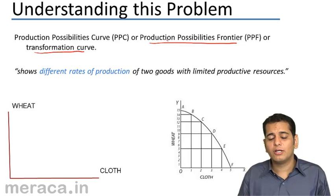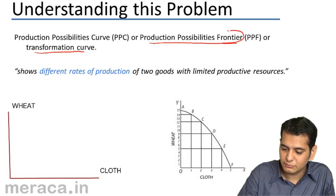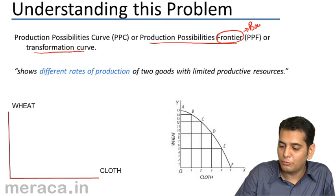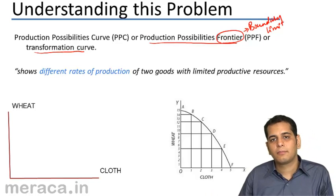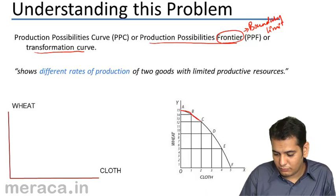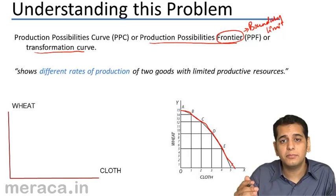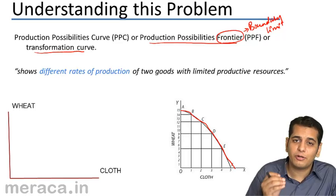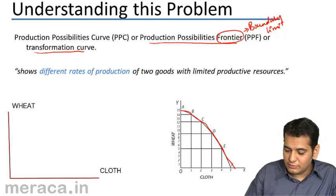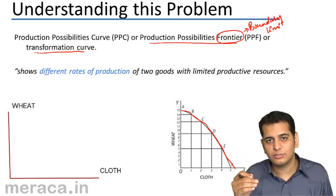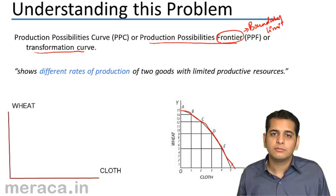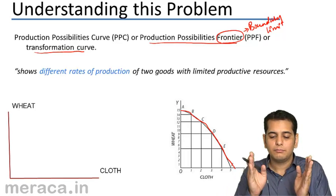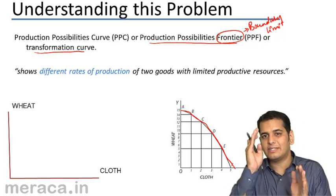We also call it the Production Possibilities Frontier. The meaning of 'Frontier' is Boundary — it also means Limits. This curve sets the limits; it tells you the maximum amount of production you can get. It is called the Production Possibilities Frontier because it sets the limit.